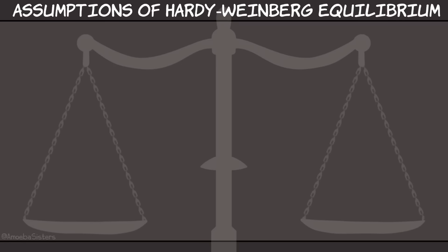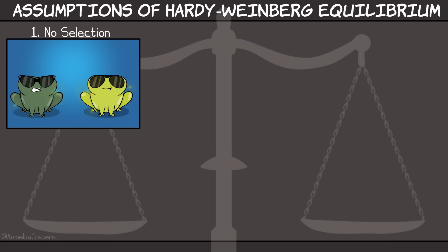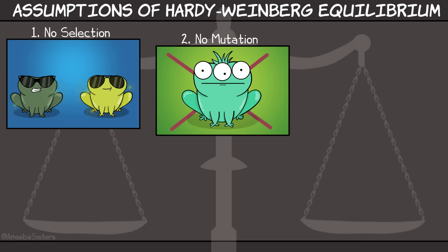Now to be in Hardy-Weinberg equilibrium, we have to have five assumptions. Number one, no selection. No natural selection is acting upon these frogs. That means neither dark green nor light green will have any impact on reproductive fitness. Number two, no mutation. Baby frogs inherit genes from their parents and there are never mutations.